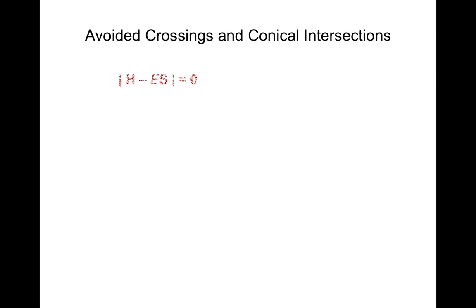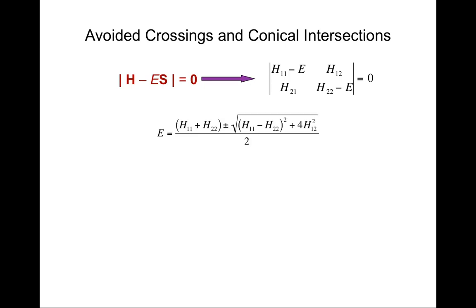Let's begin by discussing avoided crossings and conical intersections. If you think of the secular equation for a two-by-two determinant, we have two states and two energies to find. The energies are given by a simple quadratic equation. And we can ask the question: could the two states have the same energy?